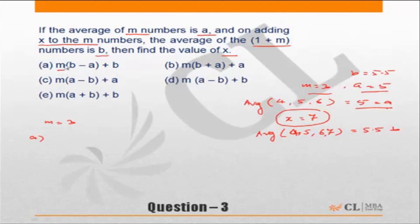Choice A: m is equal to 3, so 3 into (5.5 minus 5) is 0.5, plus b is nothing but 5.5 plus 5.5. So this becomes 1.5 plus 5.5 equal to 7. This can be the correct answer. Just hold on, don't eliminate. It is possible that some other choice may also give us the value as 7, in which case we need to look at another set of values. But as of now we will not eliminate choice A. We will eliminate all those choices which do not give us a value of 7.